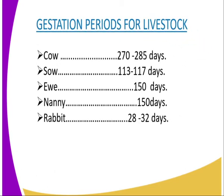The gestation periods for different livestock reared on the farm are as follows: a cow has a gestation period of 270 to 285 days; a sow has a gestation period of 113 to 117 days before she farrows; a ewe, which is a mature female sheep, has a gestation period of 150 days; a nanny goat, which is a she-goat, also gives birth at around 150 days; and a doe, which is a female rabbit, gestates for 28 to 32 days.